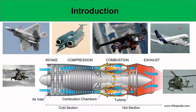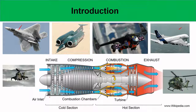Combustion happens in the combustion chamber, and then the hot gases turn the turbine. The exhaust gases, still at high temperature, are accelerated through a nozzle and exhausted. The turbine and compressor are connected through a single shaft, so the work input for the compressor comes from the work output of the turbine.